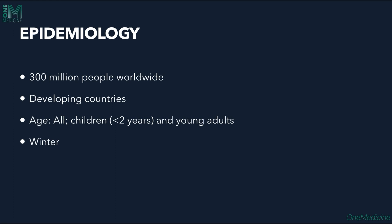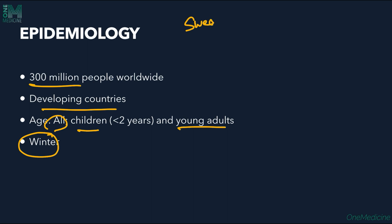Worldwide, around 300 million people are affected with scabies. It is more common in developing countries because of poor hygiene, poverty, overcrowding, and poor housing standards. All age groups are affected, mostly children and young adults. It is more common in winter than in summer because sweat has antimicrobial peptides which inhibit the growth of the scabies mite.